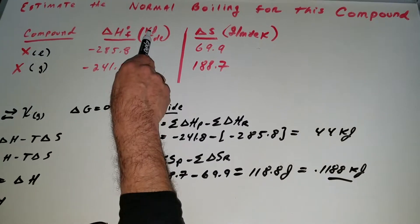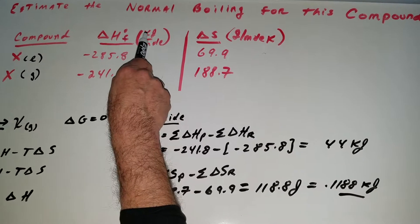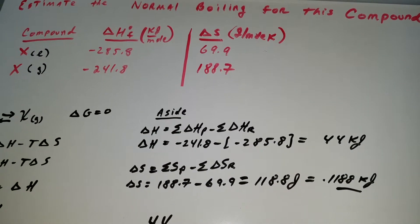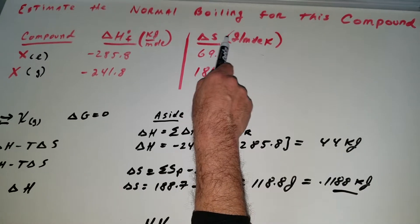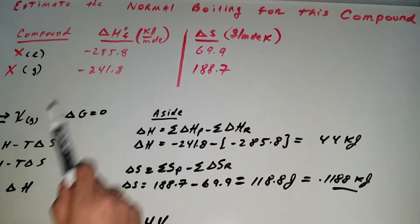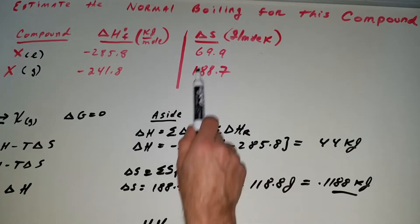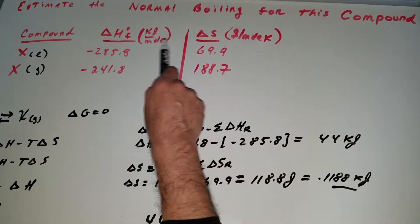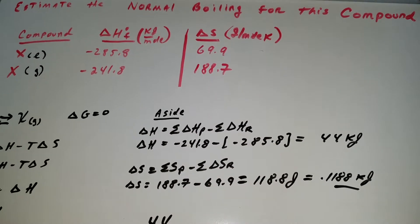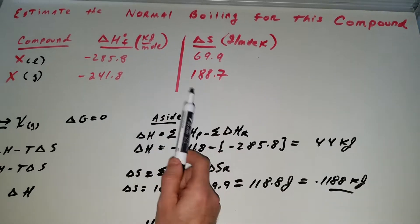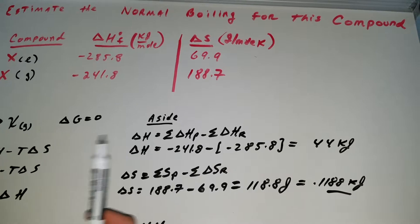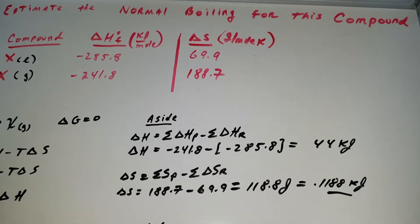Now anytime you got a problem like this be careful with the units. The heat of formation is in kilojoules per mole where the entropy is in joules per mole Kelvin. Don't worry about the Kelvin but we got to worry about the joules. Moles is fine but we got to convert one of them into either joules or kilojoules. I'm going to convert everything into kilojoules.